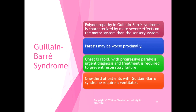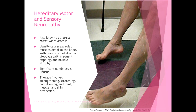With Guillain-Barré, a lot of times we're treating paresis or paralysis as patients recover — they can gain strength. The hard part is that in the initial acute stage, one-third of patients require a ventilator, so prompt treatment is critical. Charcot-Marie-Tooth disease, or CMT, is genetic, so we can't change that, but we can teach people an exercise program, help with assistive devices, and do gait and balance training. Therapy usually involves strengthening, stretching, conditioning, and joint, muscle, and skin protection education.